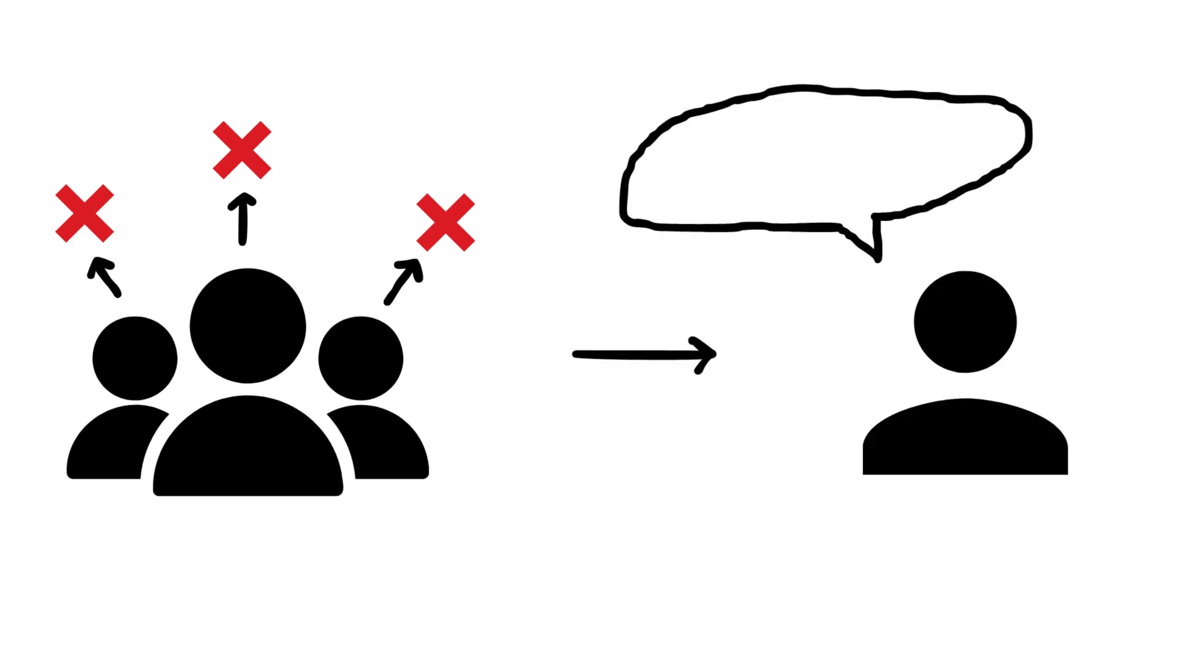Abilene paradox. A group makes a decision that none of its members actually prefer because each person assumes the others do, illustrating how group dynamics can lead to collective decisions no one individually supports.